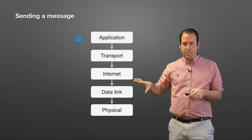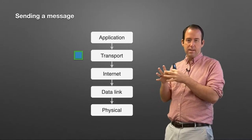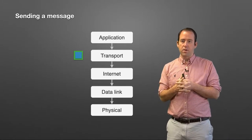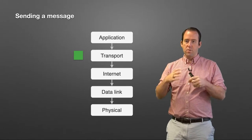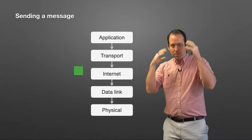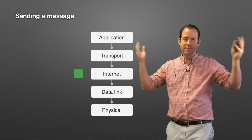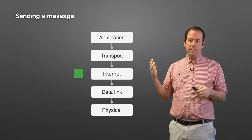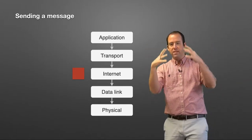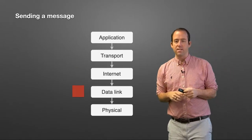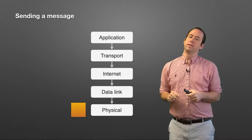The application layer request gets sent down to the transport layer, which puts its own envelope on it. It boxes up the data from the application layer and uses port addresses to specify where things need to go. That then goes down to the internet layer, which adds IP addresses. We've got the transport layer packet containing the application layer packet, enveloped within each other. Then that goes down to the data link layer, which adds its own addressing information.